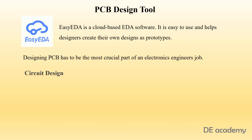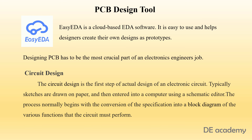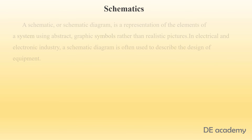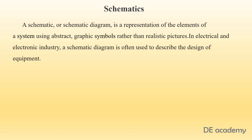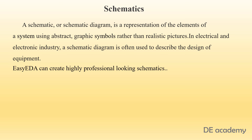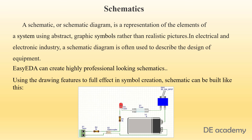The process begins with circuit designing — it is the first and foremost step of actual design of an electronic circuit. Normally, sketches are drawn on paper and then entered into a computer using a schematic editor. A schematic or schematic diagram is a representation of the elements of a system using abstract graphic symbols rather than realistic pictures, used in the electrical and electronic industry to describe the design of equipment. By using EasyEDA software, we can create a highly professional-looking schematic, and here is an example of how a schematic diagram looks.